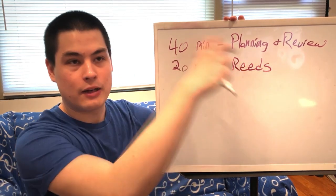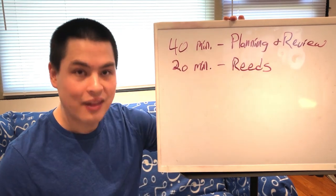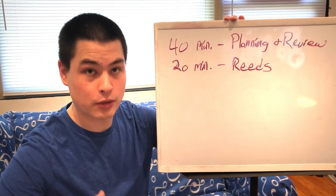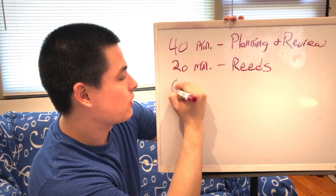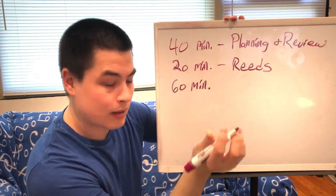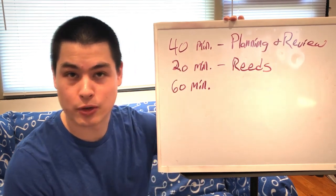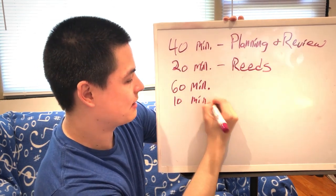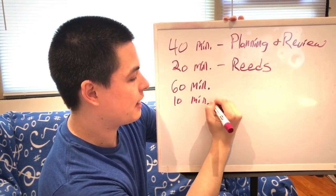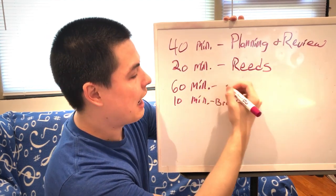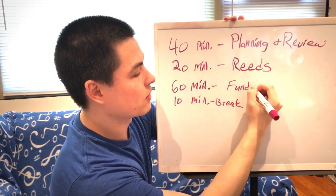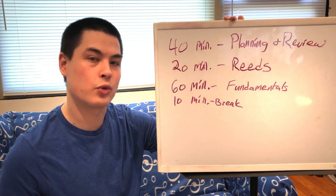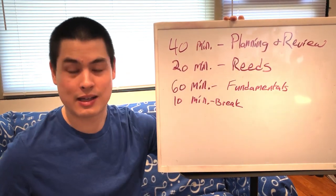Once you've done your planning, your review, and your reeds are going well, then we get into the actual blocks of practicing. So for professionals, people who want to do this full-time, the first block is going to be 60 minutes and then it's going to be alternated with some breaks, similar to the Pomodoro technique that we talked more about in the Ultimate Practice Guide video. So 60 minutes of practice, 10 minutes of a break. And for this first practice session, I would recommend working on the fundamentals. So maybe 20 minutes of long tones, 20 minutes of technique and scales, 20 minutes of articulation, then you take a 10 minute break.